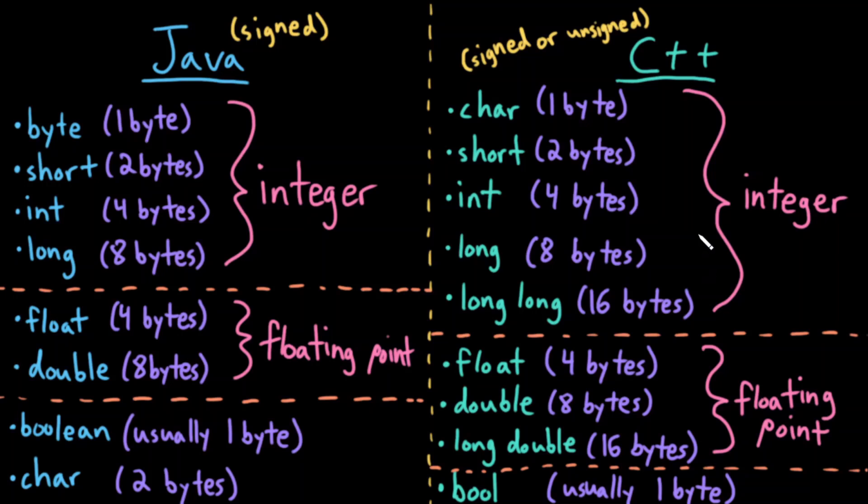Some things I should emphasize. In C++, these bytes, these sizes, are not guaranteed. They're usually these sizes, but depending on the implementation of C++ that you're using, they could vary slightly.